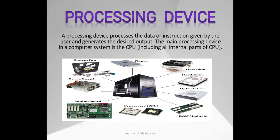Processing device: a processing device processes the data and instructions given by the user and generates the desired output. The main processing device in a computer system is the CPU, including all the internal parts of the CPU like system fan, SMPS, motherboard, RAM, ROM, hard disk etc.